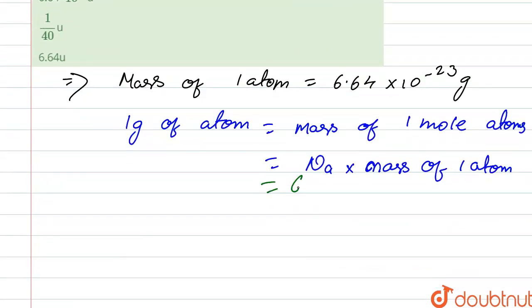So, 6.02 × 10^23 times the mass of one atom, which is 6.64 × 10^-23. After solving this, we get 40.13 gram.